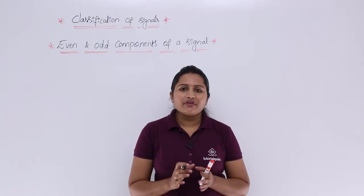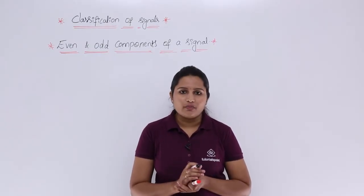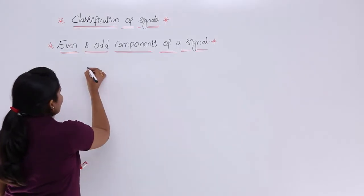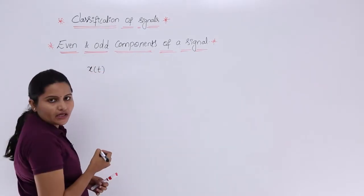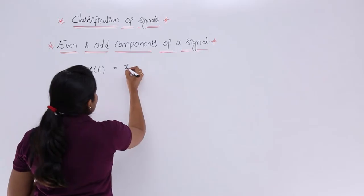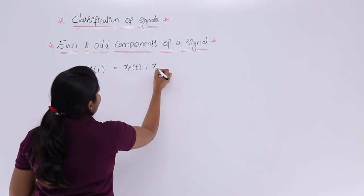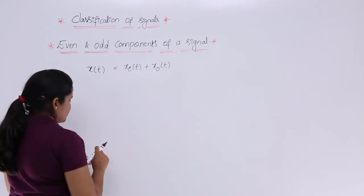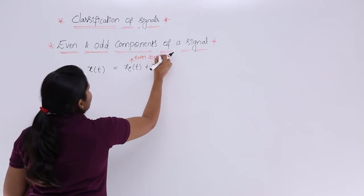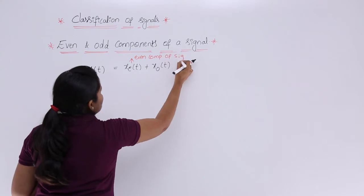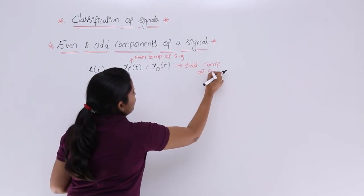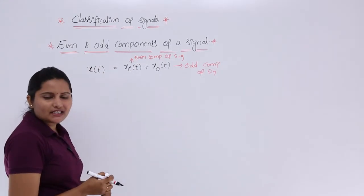Each signal has its own even component and its odd component. The relation for even and odd components is: any signal x(t) can be represented in terms of its even and odd components. That means x(t) = x_e(t) + x_o(t), where x_e(t) is the even component of the signal and x_o(t) is the odd component of the signal. Any signal can be represented with these even and odd components.